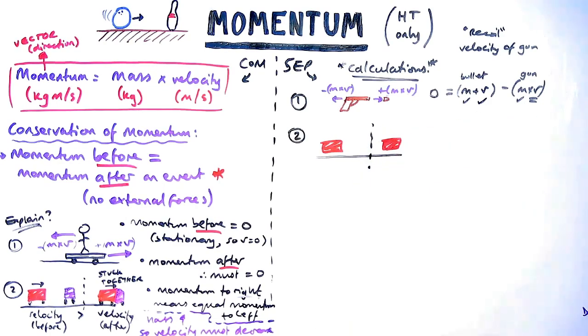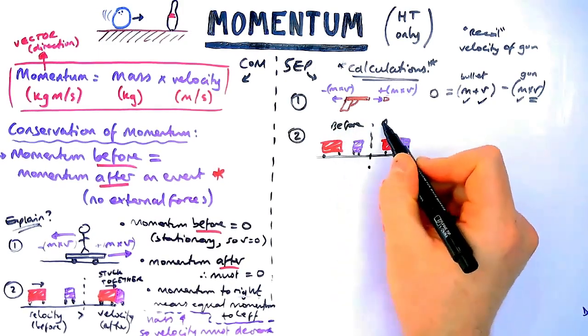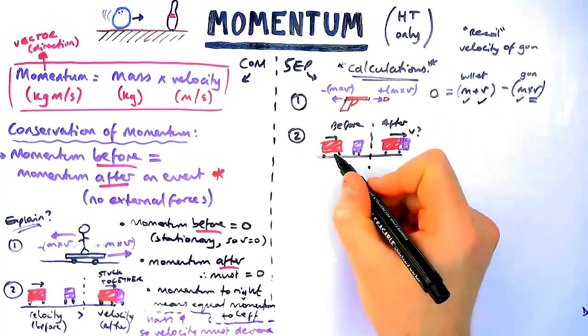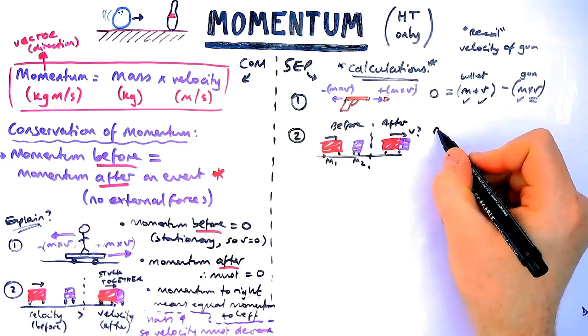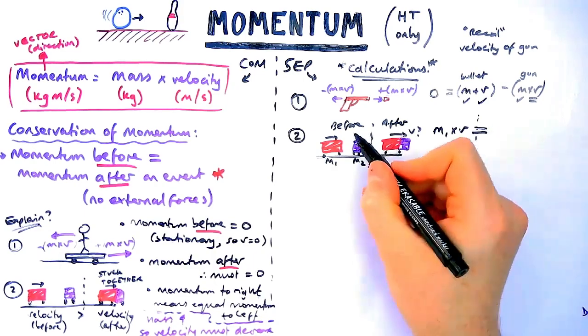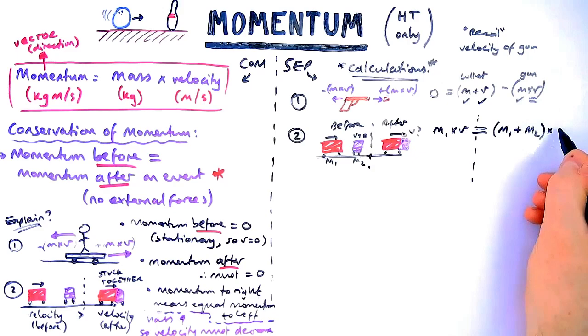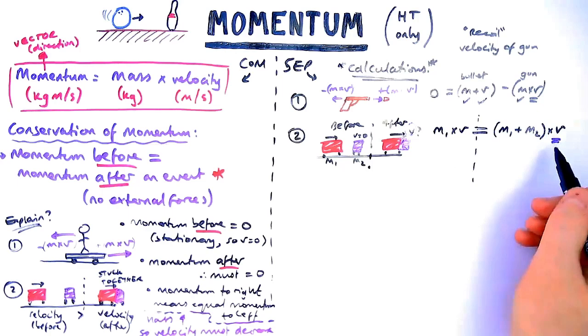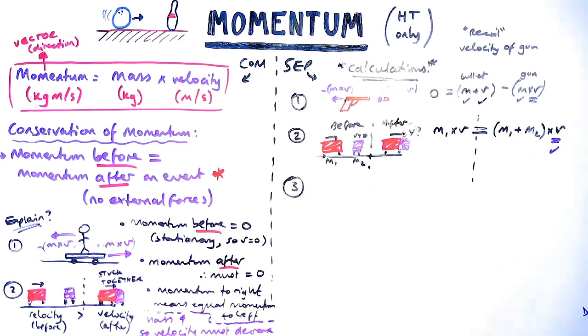Situation two just like we looked at with the trucks colliding and sticking together, let me show you how we'd work something like that out. You work out the momentum before and momentum afterwards and they might ask you for example what velocity do the two trucks move off with if they're now stuck together. In this question they give you the two masses usually, and you'd work out the initial momentum. We know the initial momentum before they collide is equal to the final momentum. The final momentum here, because they're stuck together, you have to add the masses together and treat them as one object. So it'd be m1 plus m2, the two trucks added together times by their joint velocity which you might be asked to find.